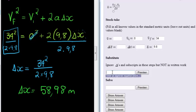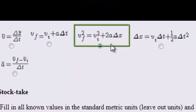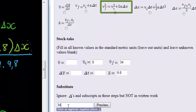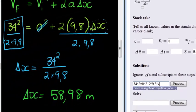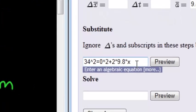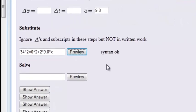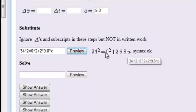This substitution step, I am going to do a normal substitution. In other words, just use that formula. Just use this formula and substitute in everything that I know. So, 34 squared is equal to 0 squared plus 2 times 9.8 times x. They do tell us to ignore the deltas. When we write it, you see I did not ignore the delta. I still wrote down the delta. But in typing it here, we are going to ignore the delta. Preview. And there we see that is exactly what I want it to be.